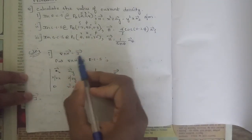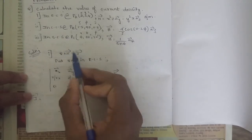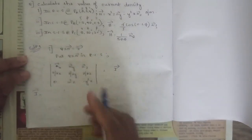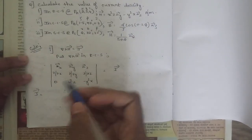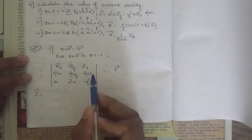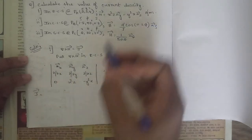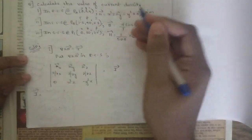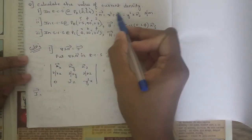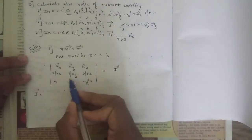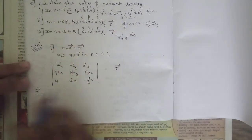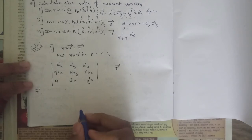For the first sub-question, we know the relationship curl of H equals J, so del cross H equals J. Substitute del cross H in rectangular coordinate system using the determinant: first row a_x, a_y, a_z; second row ∂/∂x, ∂/∂y, ∂/∂z; third row 0 (no a_x component), x²z (coefficient of a_y), and −y²x (coefficient of a_z).